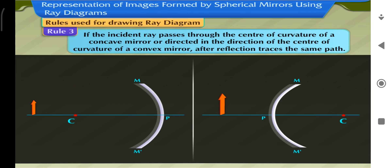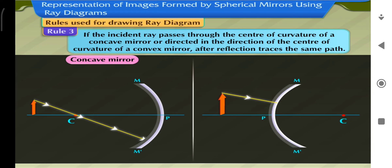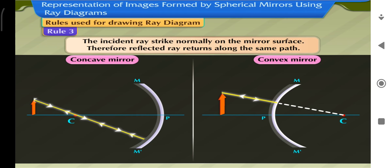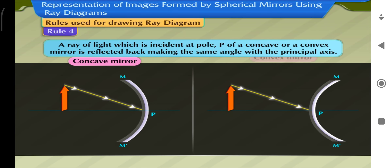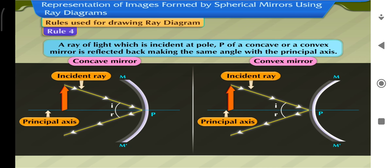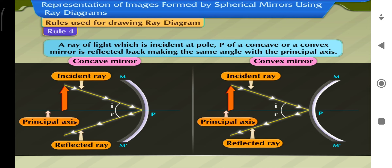Rule 3: If the incident ray passes through the center of curvature of a concave mirror, or is directed towards the center of curvature of a convex mirror, after reflection it traces the same path. Here, the incident ray strikes normally on the mirror surface, so the reflected ray returns along the same path. Rule 4: A ray of light incident at the pole P of a concave or convex mirror is reflected back making the same angle with the principal axis. The incident and reflected rays follow the laws of reflection at point P and thus make equal angles with the principal axis.